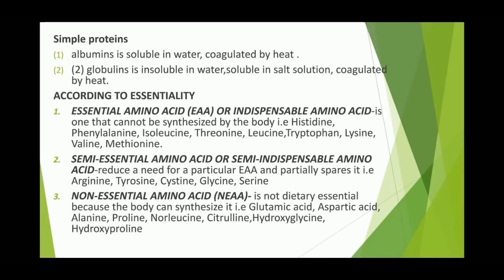Classification of amino acids by essentiality: Essential amino acids (indispensable) cannot be synthesized by the body — examples: histidine, phenylalanine, isoleucine, threonine, leucine, tryptophan, lysine, valine, methionine. Semi-essential amino acids reduce the need for a particular essential amino acid and partially spare it — examples: arginine, tyrosine, cysteine, glycine, serine. Non-essential amino acids are not dietary essential because the body can synthesize them — examples: glutamic acid, aspartic acid, alanine, proline, norleucine, citrulline, hydroxyglycine, hydroxyproline.